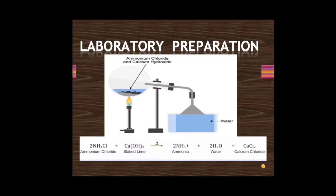The apparatus is kept tilted so that any gas formed is moved out of the round bottom flask. When ammonia gas is dissolved in water, we get ammonium hydroxide, and ammonium hydroxide is a base. The apparatus shows ammonium hydroxide being collected using an inverted funnel arrangement.